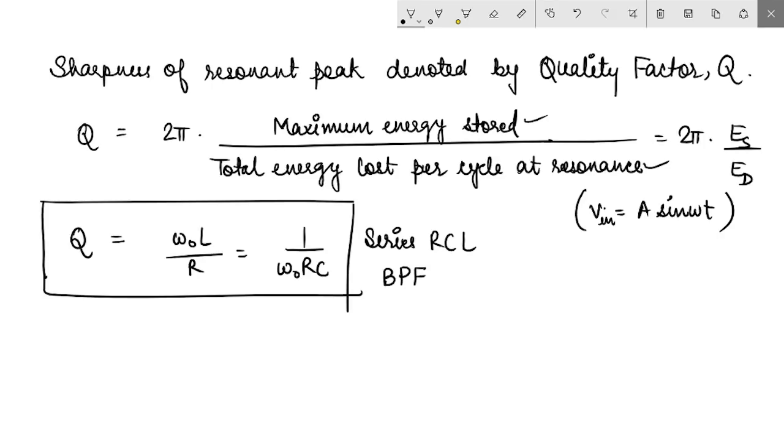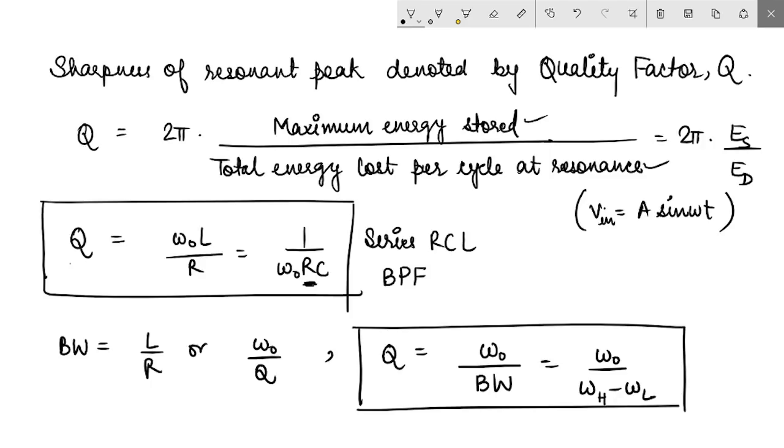And as you can see, that quality factor would increase as the value of R decreases. Alternatively, if we combine these equations, we can write that the bandwidth is L by R or ω₀ by Q. Or in other words, we can also write that the quality factor is a ratio of resonant frequency and the bandwidth. This means that a bandpass filter would become more selective, that means it would have a higher value of Q, if the bandwidth is decreased.